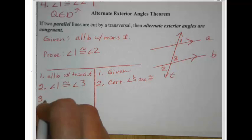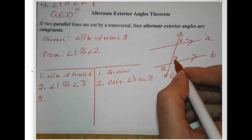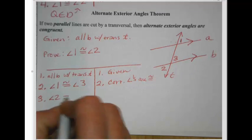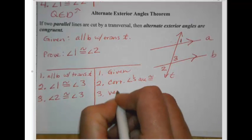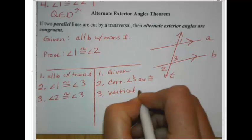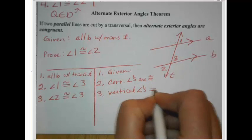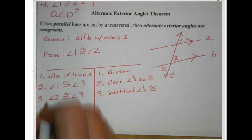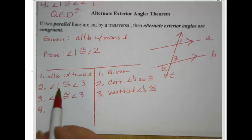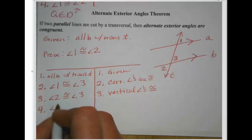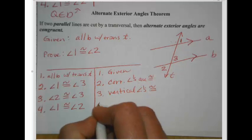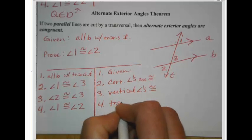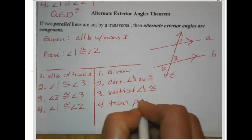Then, angle 2 is congruent to angle 3 in my picture because they're vertical angles, and vertical angles are congruent from our vertical angles theorem. Last step: since I've established that angle 1 matches angle 3 and angle 2 also matches angle 3, I can finally say angle 1 is congruent to angle 2 because of the transitive property one more time.